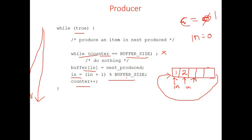The 'in' index increments using the formula: in = (in + 1) % buffer_size. This ensures circular rotation — when 'in' reaches the last location and the producer wants to produce the next element, 'in' rotates back to point to the first element in the buffer, like a circular linked list.